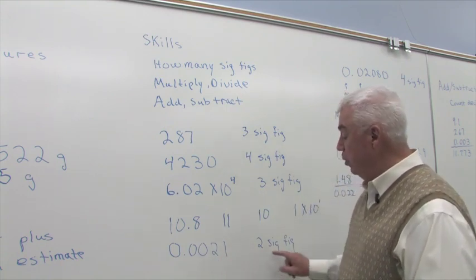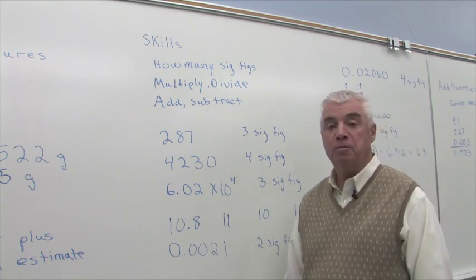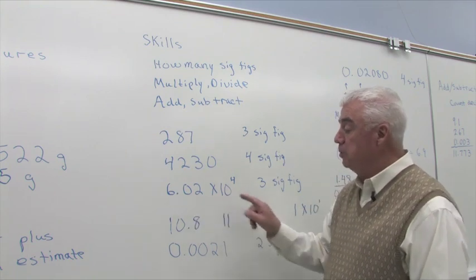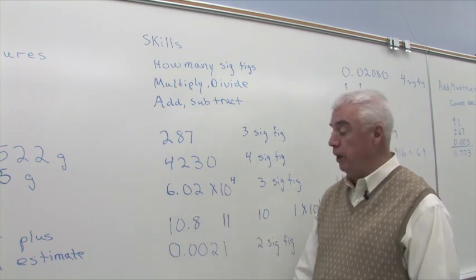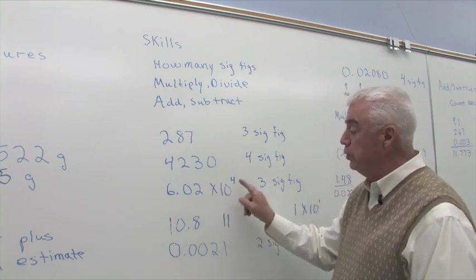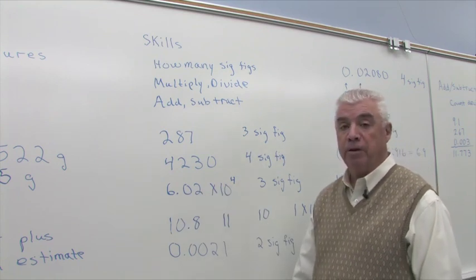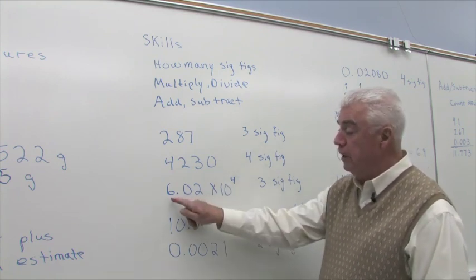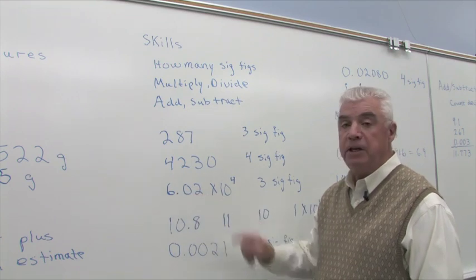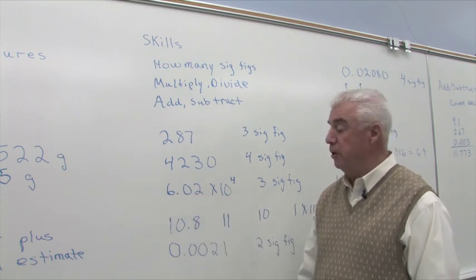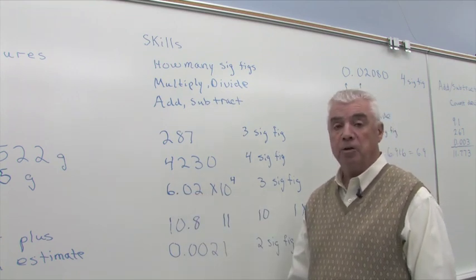If you see a number expressed in scientific notation, 6.02 times 10 to the fourth, the rules for significant figures say that only these digits, the 6, the 0, and the 2, are significant.